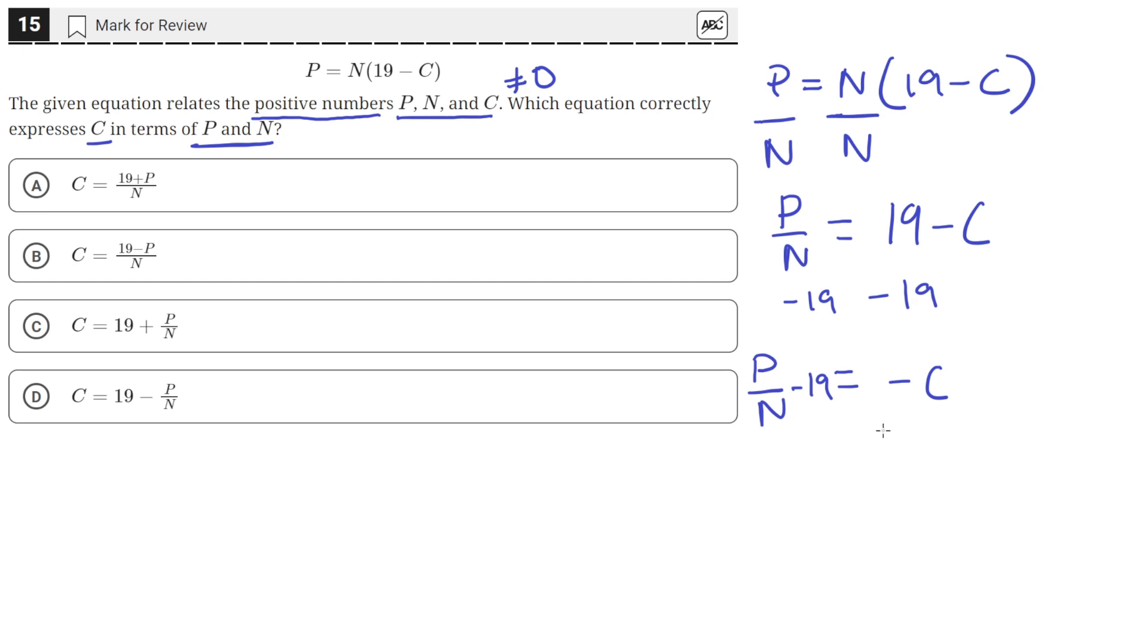Now we can multiply both sides by a negative 1. This way, now this P over N term is negative, and the negative 19 becomes positive. So we'll be left with 19 minus P over N. And on the right-hand side, we'll just be left with C. So now we've isolated C and expressed it in terms of P and N. And that is answer choice D.